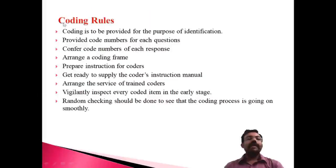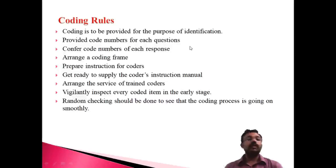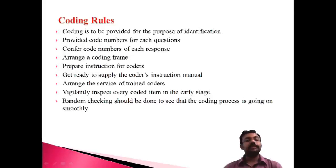What are the important rules of coding? The first rule is that coding is done for the purpose of identification. The second rule is to provide code numbers for each question — every question related to your research must have a code number. The third rule is to confer code numbers for each response, ensuring each question is coded correctly. The fourth rule is arranging the coding frame.